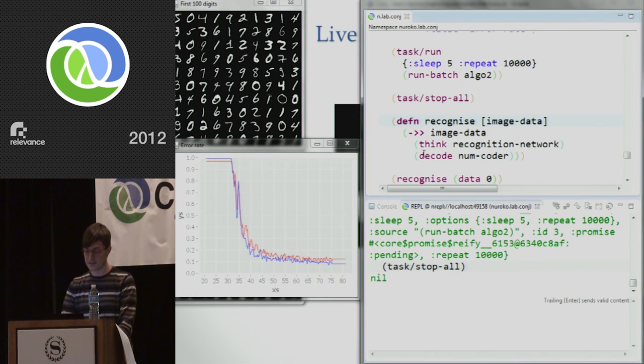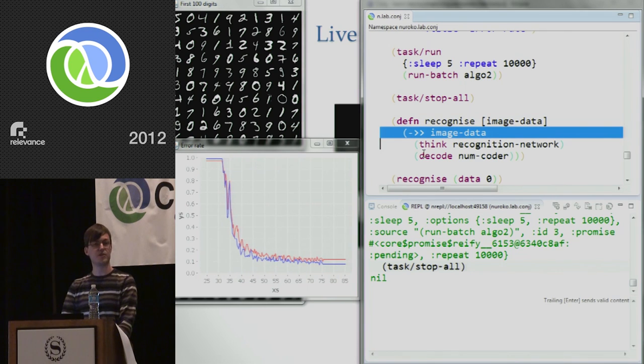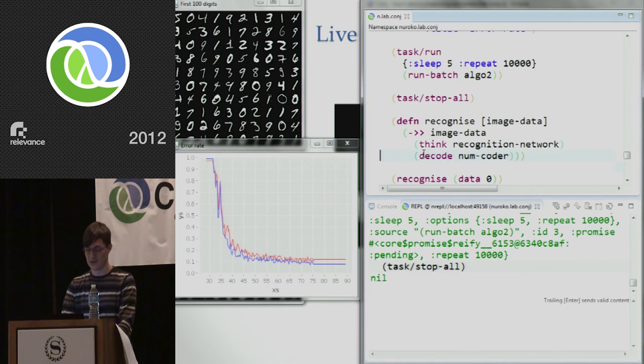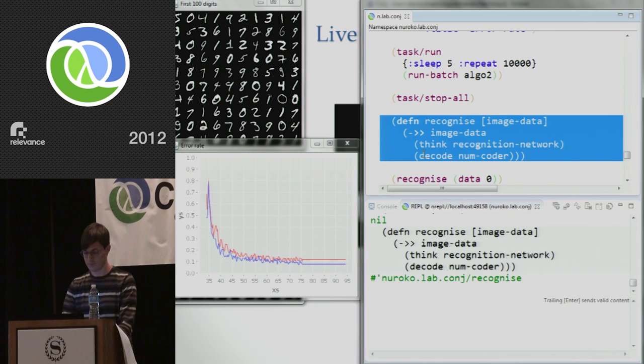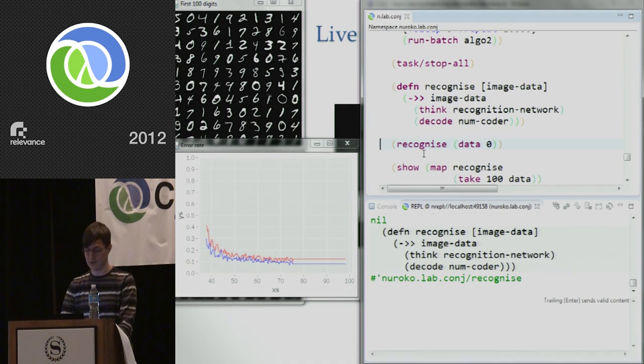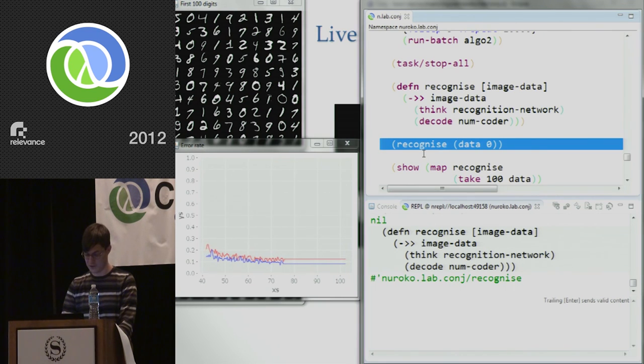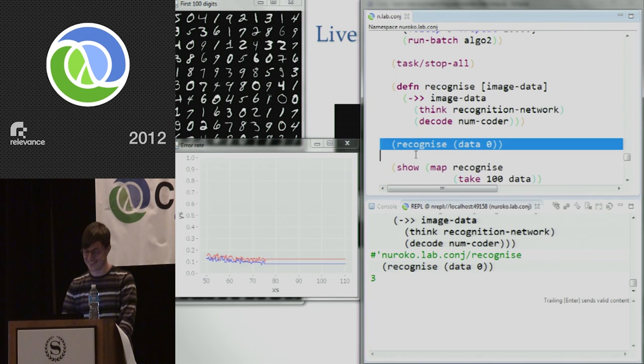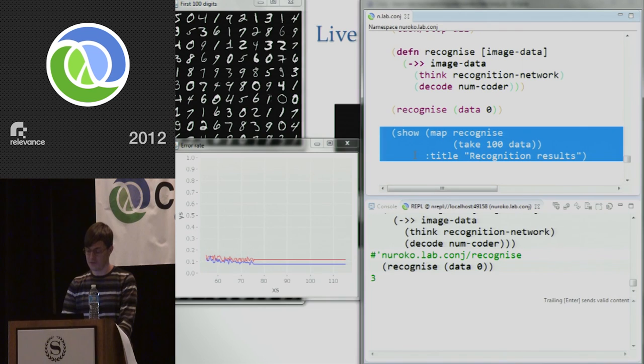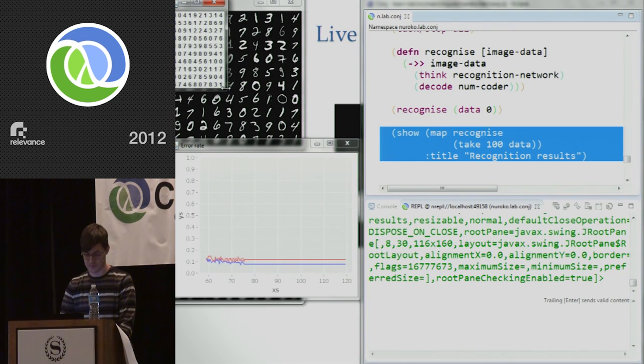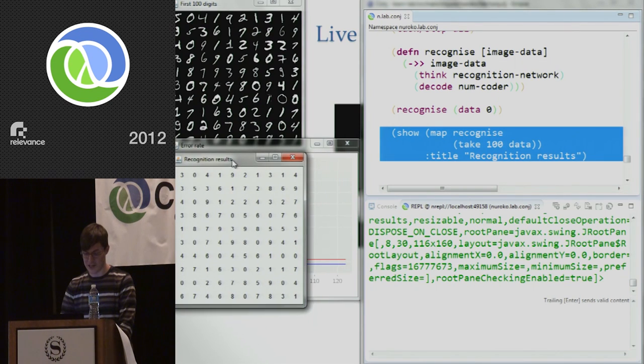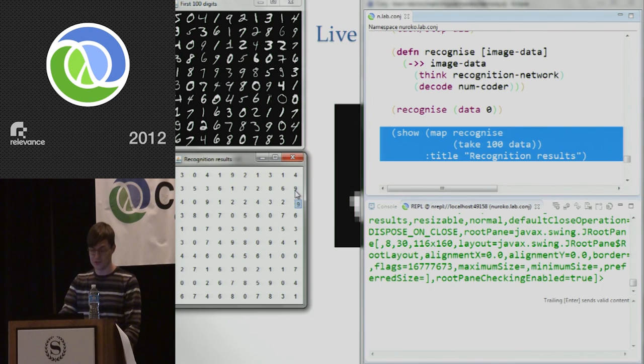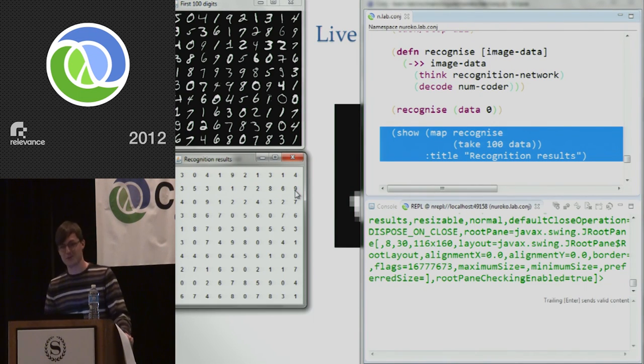And let's see the outputs we get. So we'll just define a recognize function. This is just going to take the image data. It's going to run it through our recognition network and put it through our number coder to decode the output. So the first data item, I think that was a 5. Yeah, it's 5 in the top left. Let's see what it gets. Ah, it gets a 3. So that's one of the ones that's getting wrong. But that's not a very well-written 5. It sort of looks a bit like a 3. But if I map, let's just map that over the first 100 digits. There you are. Well, that's the actual outputs from the network compared to the inputs. And as you can probably see, it's getting most of them right. It's getting about 90% success rate on image recognition, which isn't state-of-the-art. But, you know, it's not bad for like a quick 5-minute exercise.